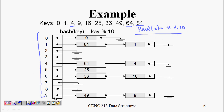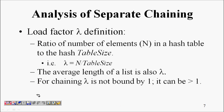Now how do we analyze separate chaining? We use the load factor λ, which is the ratio of the number of elements n divided by the table size. The average length of each linked list is λ.